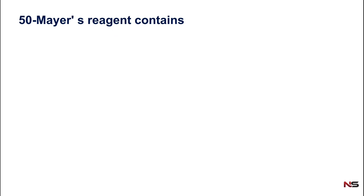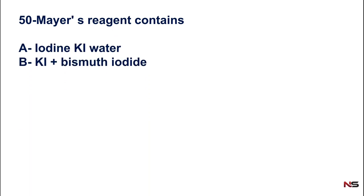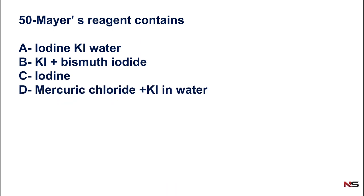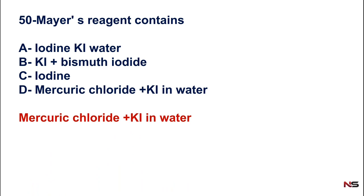Question 50 (last question): Mayer's reagent contains — option A) iodine potassium iodide water, B) potassium iodide bismuth iodide, C) iodine, D) mercuric chloride plus potassium iodide in water. We already know iodine + potassium iodide + water is Wagner's reagent, and potassium iodide + bismuth iodide is Dragendorff's reagent. So the correct answer is option D — mercuric chloride plus potassium iodide in water. That is Mayer's reagent.